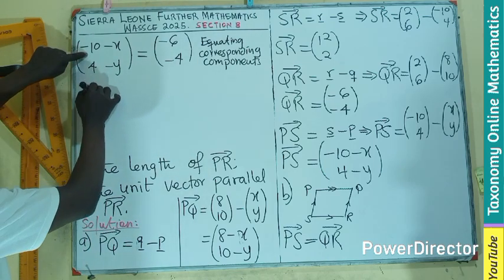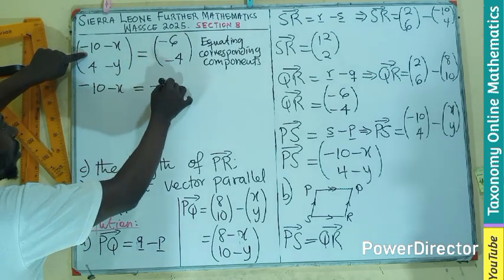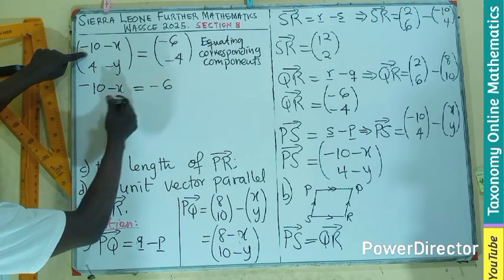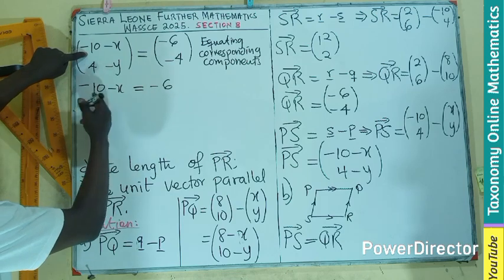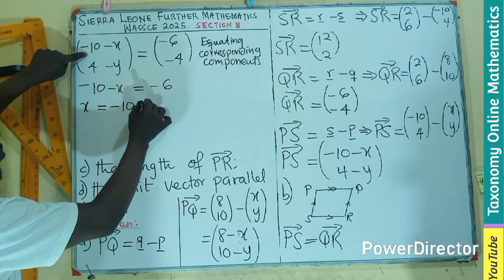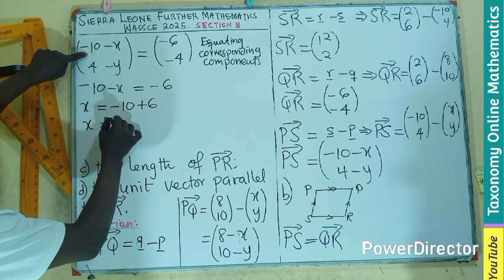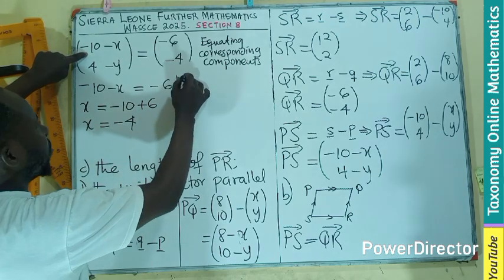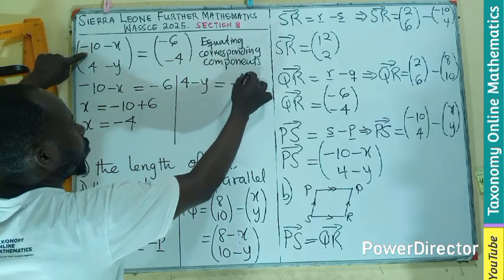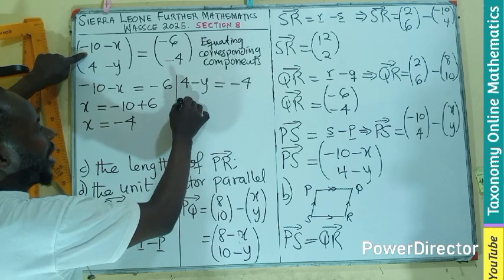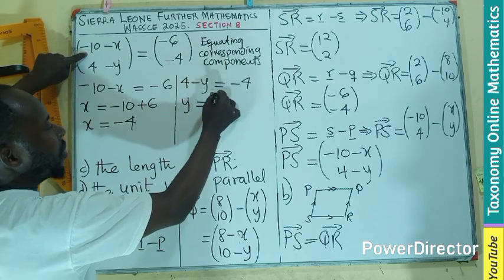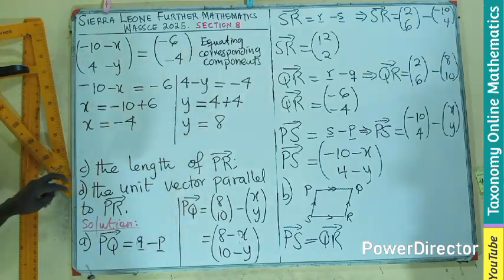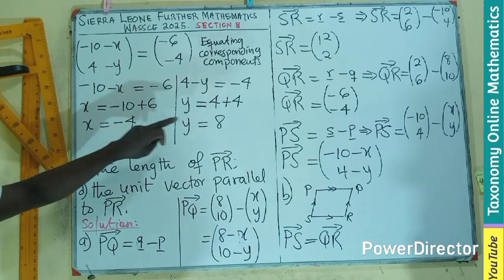Equating corresponding components, that means -10 - X is the same as -6. I can rearrange: X = -10 + 6, so X equals -4. Then we can also pick 4 - Y equals -4. Send the Y there as positive: Y = 4 + 4, so Y equals 8. So now we know the values of X and Y.